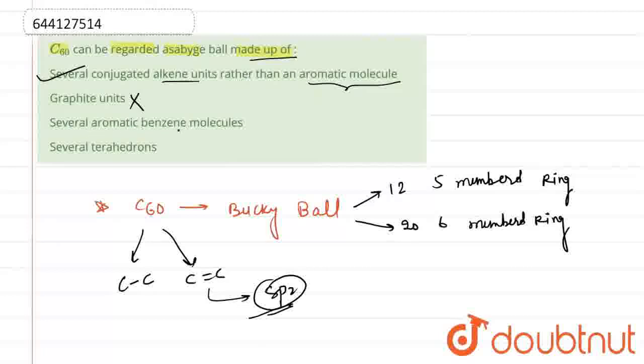Third, it is saying several aromatic benzene molecules only. This is also not correct. Fourth, it is saying several tetrahedrons. So this is not correct. So the correct option for this question should be only option A. Thank you.